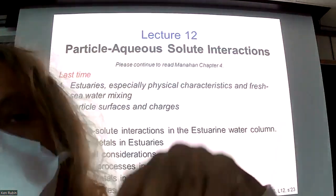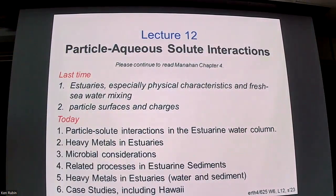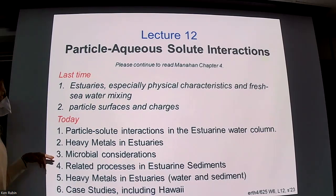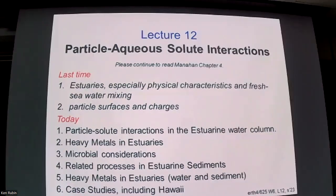We're going to continue the discussion from last time where we talked about estuaries — some physical stuff and some chemical perspectives on surfaces and particles. We're going to put those two things together now and talk about how particles and solutes interact in estuaries and how that affects the composition of the water column. Then we'll focus on heavy metals and microorganism interactions with particles, redox issues within sediments, and look at specific cases in different sorts of estuarine sediments.